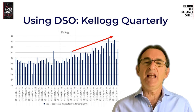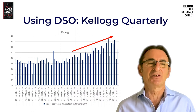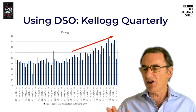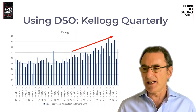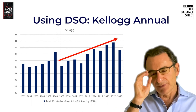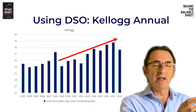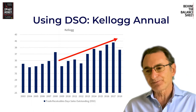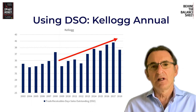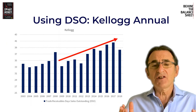What you can see here is the Kellogg's quarterly day sales outstanding — the debtor days. You can see it's quite a noisy chart, but you can see that there is a trend up. It's much clearer if you look at the annual numbers. I like to do this analysis both looking at quarterly and annual numbers, and the annual numbers show quite a strong trend up.